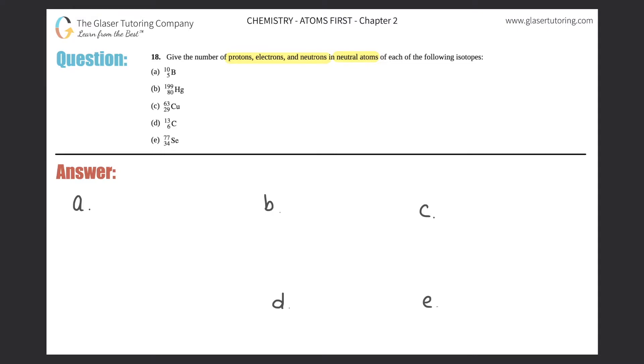So for the first one, we have boron, which is B, 10, and 5. Now this is standard notation, which means that the 10 is alluding to the Z number, which is the mass number. The bottom number is referencing the A number, which is the atomic number.